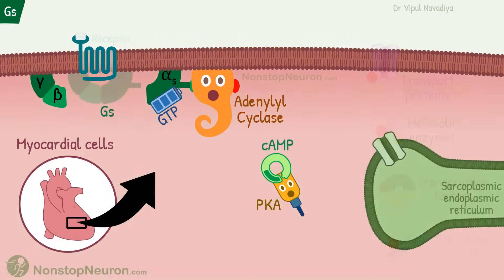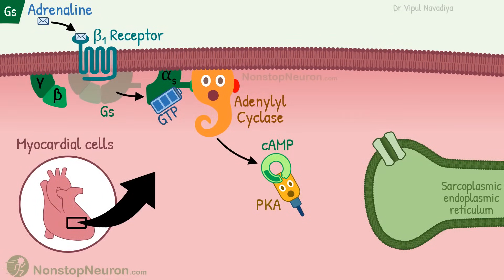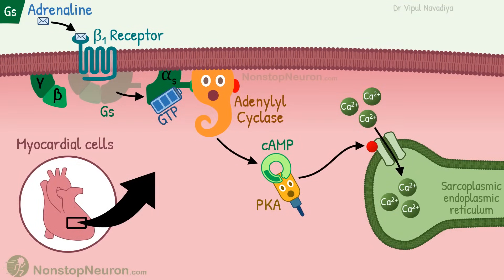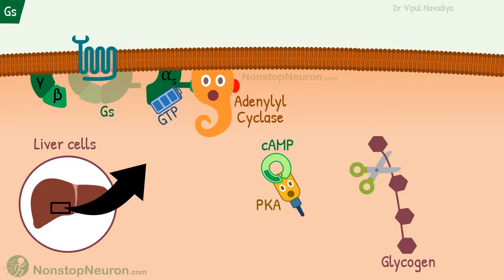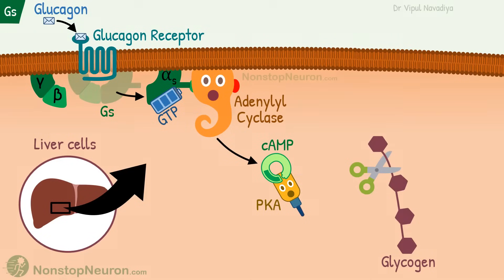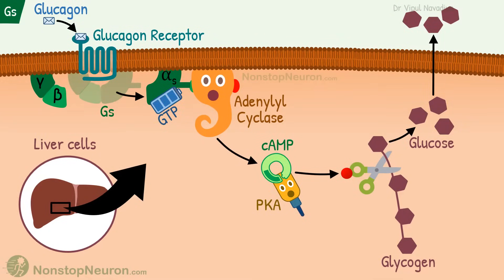As an example, let's see what happens in myocardial cells. They contain beta-1 receptors, which are Gs protein-coupled receptors. Adrenaline stimulates these receptors and activates the adenylyl cyclase pathway. This eventually leads to phosphorylation of proteins that sequester calcium into the sarcoplasmic reticulum, ultimately causing an increase in the contractility of cardiac myocytes. Another example: liver cells contain glucagon receptors, which are also Gs protein-coupled receptors. Their activation by glucagon activates this pathway and causes phosphorylation of key enzymes for glycogenolysis, ultimately leading to release of glucose by the liver.